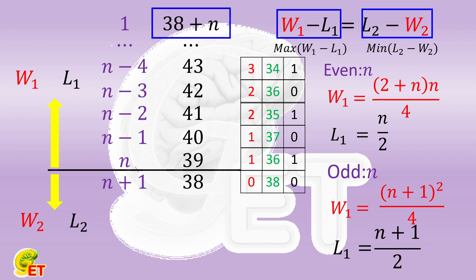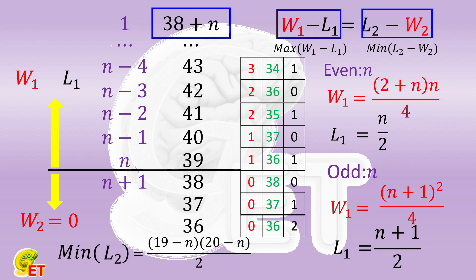For the teams that have no more than 38 points, they don't need any winning game to achieve those points. So to minimize the amount of wins, we can set all of theirs as 0. That is, W2 is equal to 0. The only requirement then is that the amount of losing games must increase, along with other ranks going down. The team with 38 points therefore loses 0 games. The team with 37 points loses 1 game. The team with 36 points loses 2 games, and so on. Arithmetic progression again. So the minimum value of L2 minus W2, that is in fact, the minimum value of L2 itself, is equal to half of 19 minus n times 20 minus n.